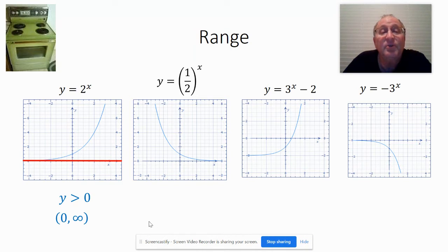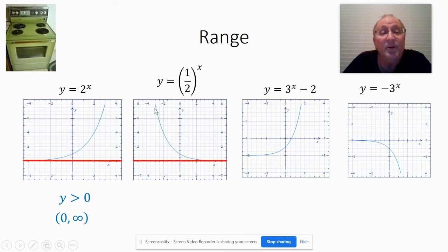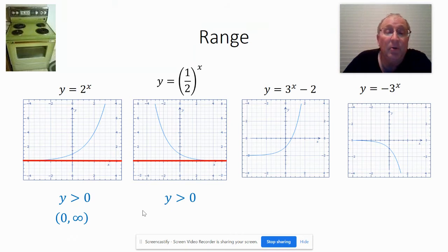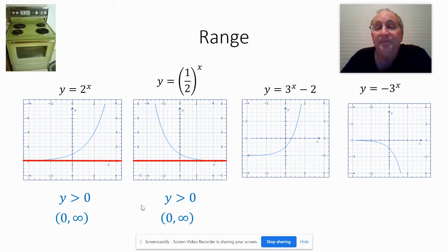Let's look at our next one here. Notice the asymptote is still the same — it's at 0. This one is a decay rather than a growth, but yet the range is still all the positive values, so y greater than 0, or 0 to infinity.